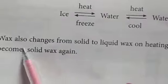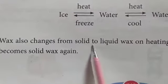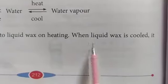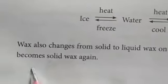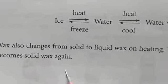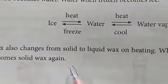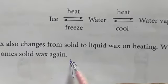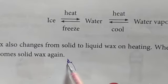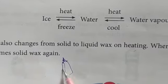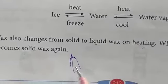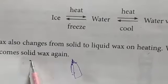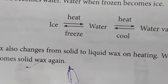Wax also changes from solid to liquid wax on heating. When liquid wax is cooled, it becomes solid wax again. You know the wax candle — when you light the candle, by the heat it gets melted and turns into liquid. And again when it gets cooled, it changes back into solid wax.